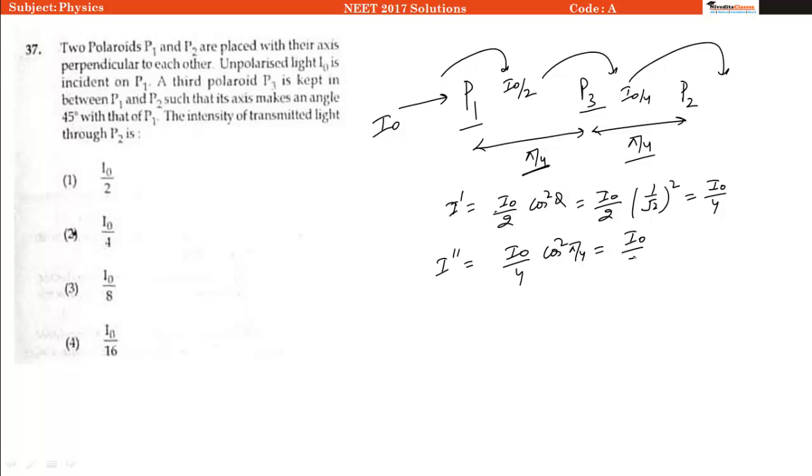So putting the values, we will have I naught divided by 8 as the final intensity, which is our option number 3.